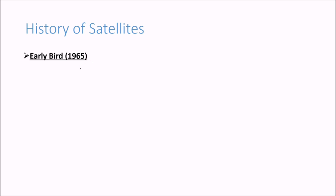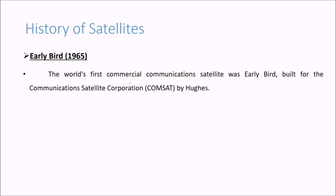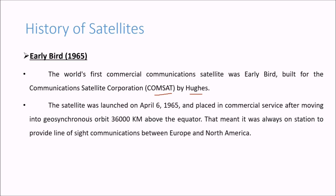Early Bird 1965. The world's first commercial communication satellite was Early Bird, built for the Communication Satellite Corporation, ComSat, by Hughes. The satellite was launched on April 6, 1965 and placed in commercial service after moving into geosynchronous orbit, 36,000 km above the equator. That meant it was always on station to provide line of sight communication between Europe and North America.